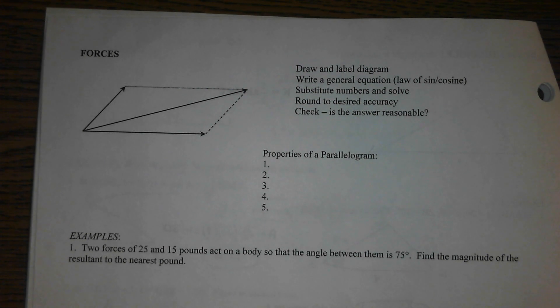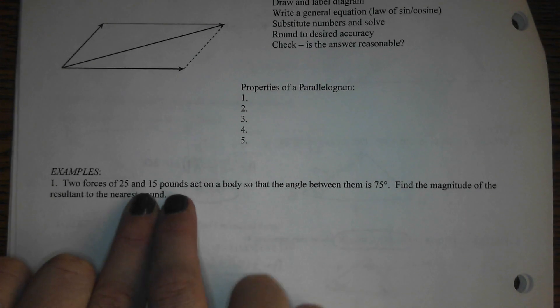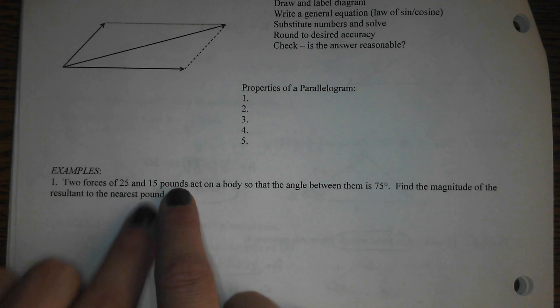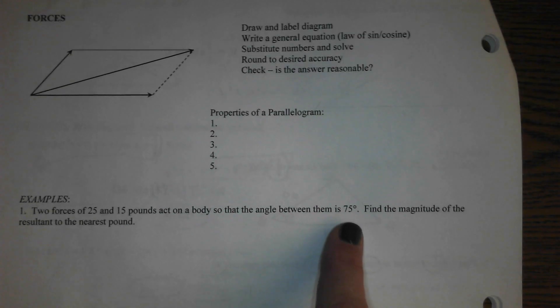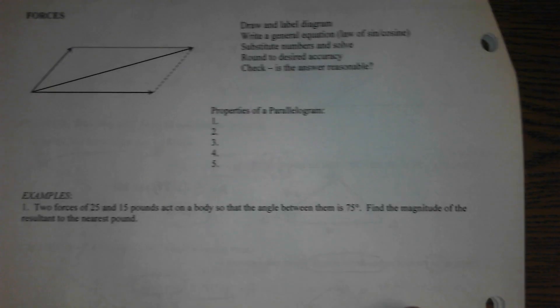All right, so here's the deal. In general, we'll just jump right to the first one. Two forces of 25 and 15 pounds act on something so that the angle between them is 75 degrees. Find the magnitude of the resultant to the nearest pound.